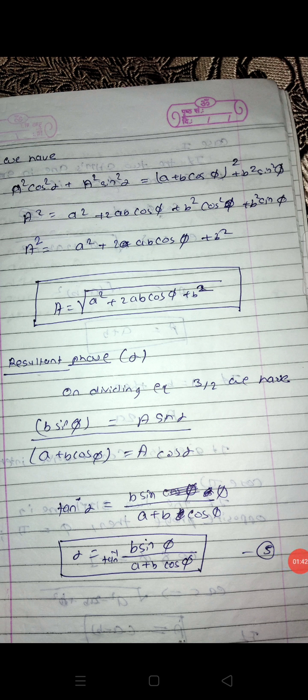So A is equal to under root of (a² + 2ab cosφ + b²). This whole term we got under the root. So this was our resultant amplitude.